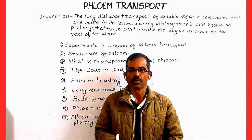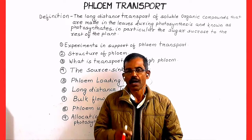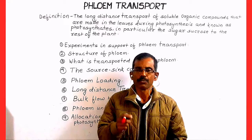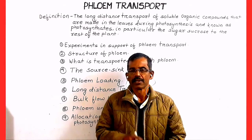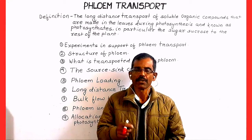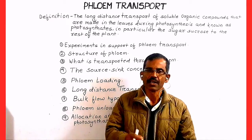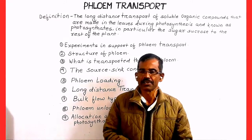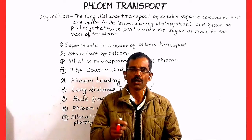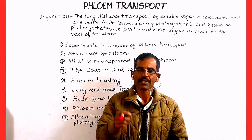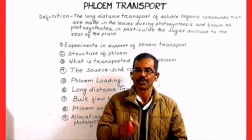life evolved in water. As plants started moving from water to the land, they faced many challenges in their terrestrial existence. In order to survive on the land, plants develop roots and leaves.